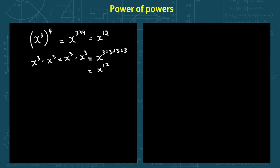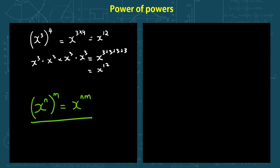So let's write this rule down. The rule says that x to the power of n, raised to the power of m, will be equal to x to the power of n times m. That's another rule to remember when talking about powers.